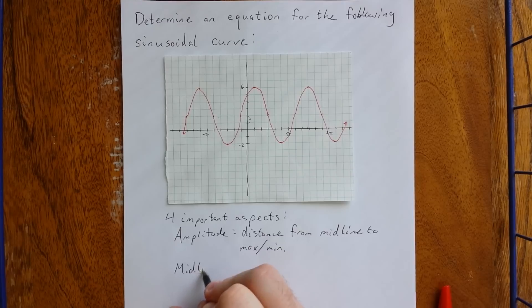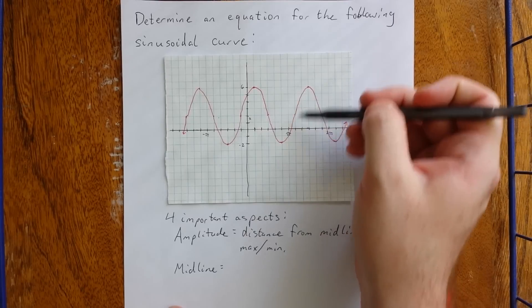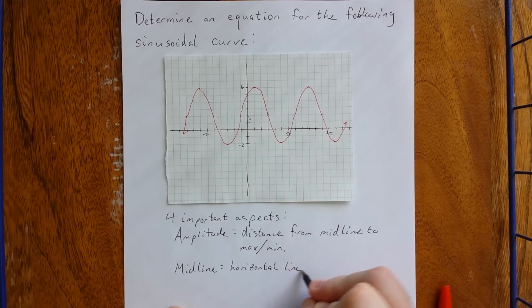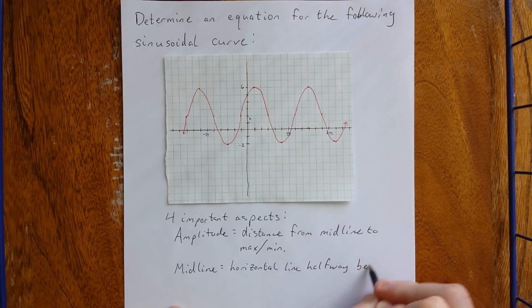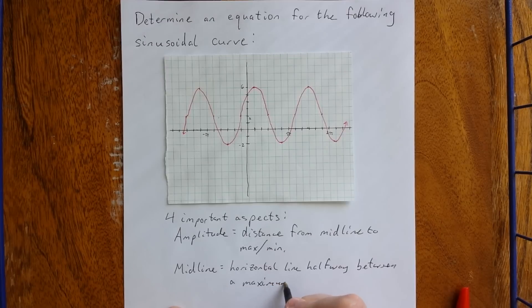If I'm going to talk about the midline, I should probably define it. The midline is the line that runs exactly halfway in between a maximum and minimum value. So this is the horizontal line halfway between a maximum and minimum.